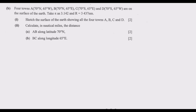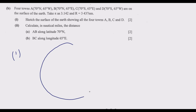Question B: Four towns A, B, C, and D are on the surface of the earth. A is 70°N, 65°W; B is 70°N, 65°E; C is 70°S, 65°E; and D is 70°S, 65°W. Take pi as 3.142 and radius R = 3437 nautical miles. Sketch the surface of the earth showing all four points A, B, C, and D — that's worth 2 marks.